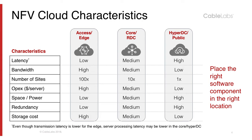Bandwidth is maximum on the edge and least on the right-hand side. In terms of number of sites, edge locations are numerous, so there are lots of edge clouds. Core or regional data centers are fewer, and hyperscale data centers or public clouds can often be just a handful. The cost of managing the environment is highest on the left, since these are remote sites requiring someone to physically drive out and do maintenance in highly constrained environments. On the right, huge data centers with operational staff on site make management much less expensive.